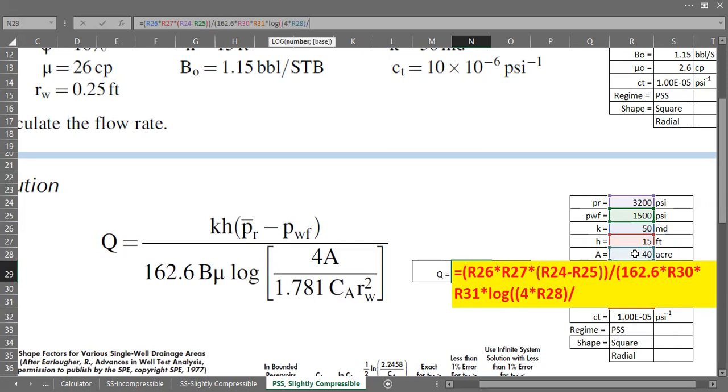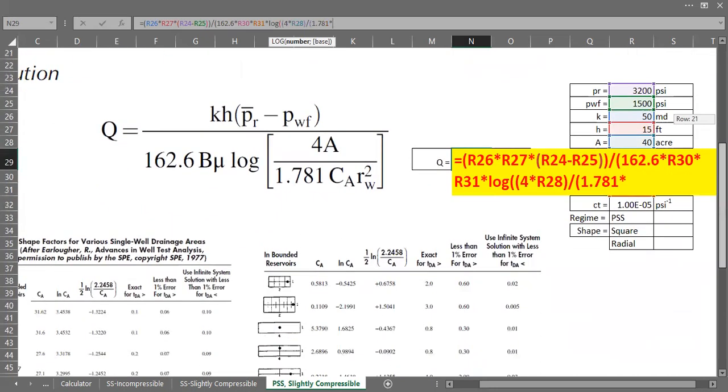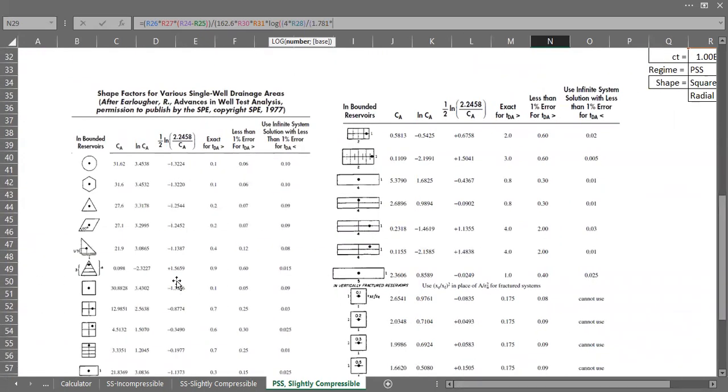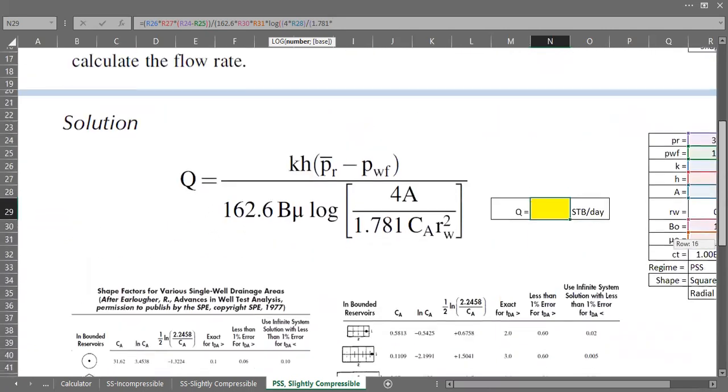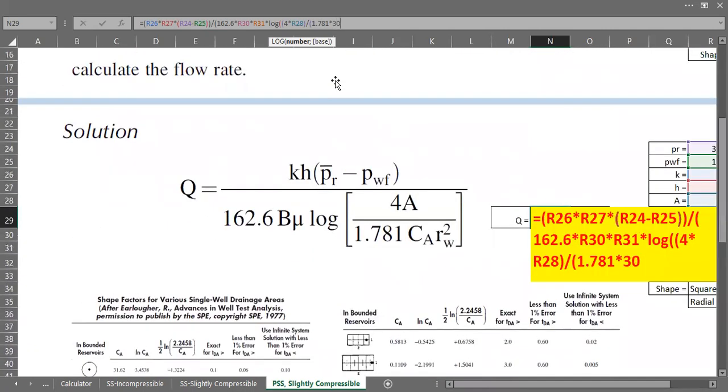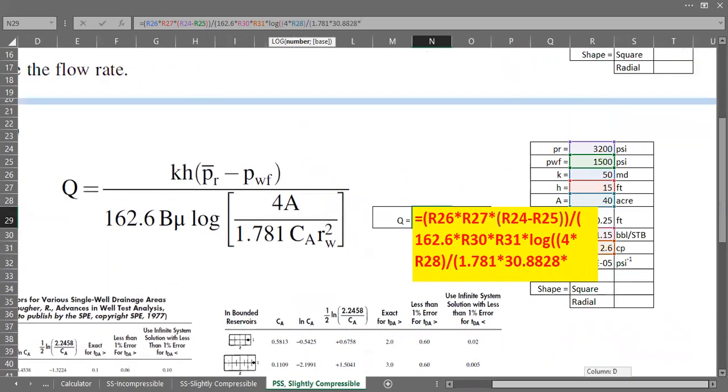Open, I want to make parenthesis again, 4 multiplied by the area acre, close, and then divide it with 1.781 multiplied by shape factor and the shape factor 30.8828 multiplied by well bore radius.